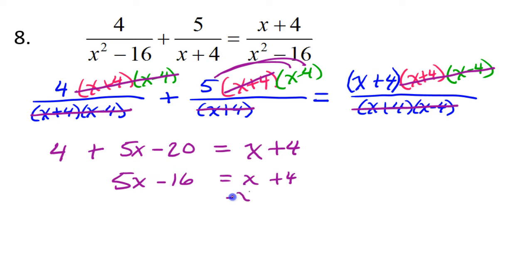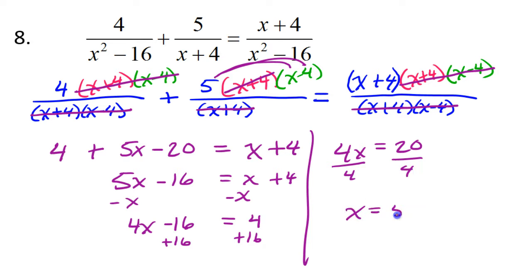Now, I could subtract x from both sides. That gives me 4x minus 16 is equal to 4. Now, adding 16 to both sides, that gives me 4x is equal to 20. And then, dividing both sides by 4 gives me x equals 5.